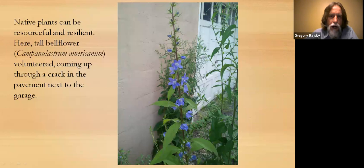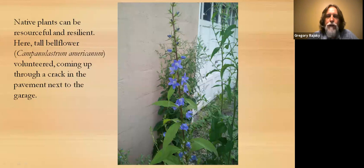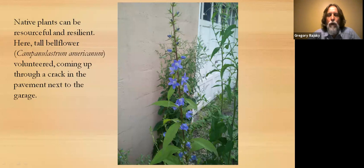Here's another opportunistic plant — tall bellflower, Campanulastrum americanum — growing through a crack in the pavement right next to a garage. The owner let it go to seed and that plant is now appearing elsewhere around the garage in more suitable habitat. You could say the plant is resourceful, resilient, and opportunistic; others might say it's aggressive or weedy. Again, it's all about context — what you put where will affect how much thinning and weeding you need to do later.